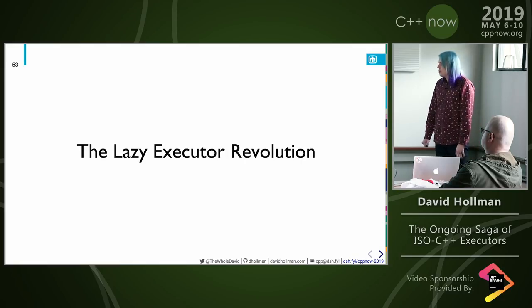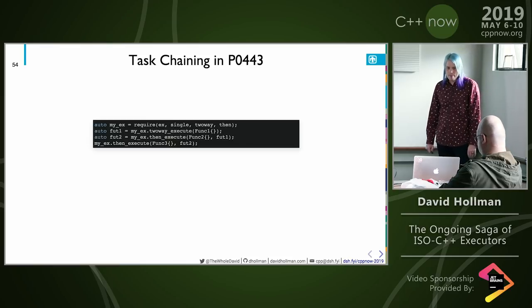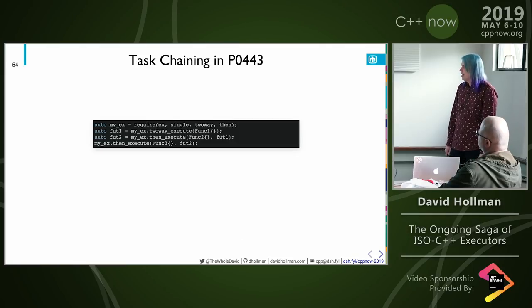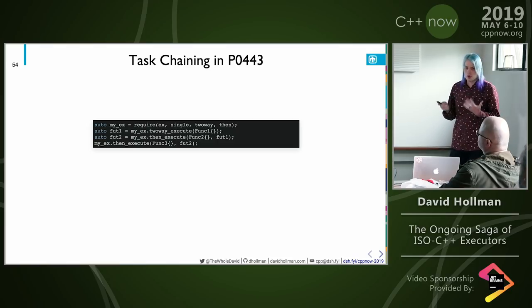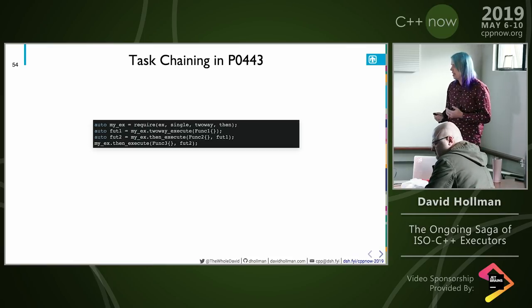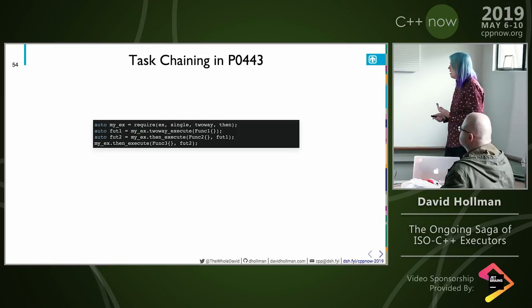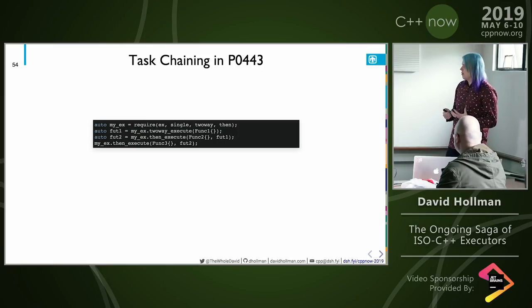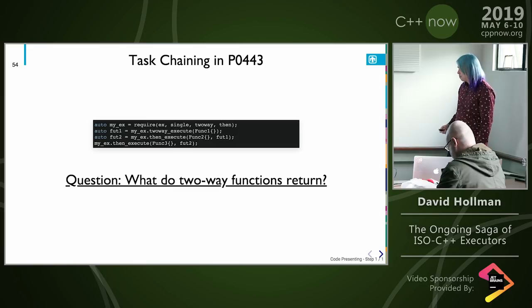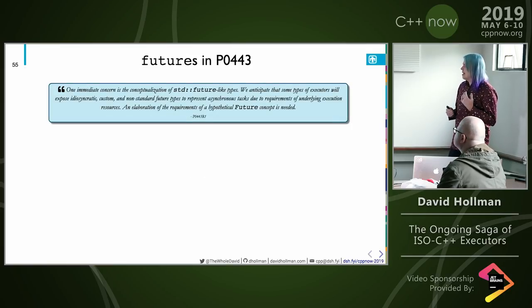That wasn't the end of the story. Let's talk about task chaining in P0443. We had a 'then execute' method and two-way execute methods that returned some sort of output channel — we were calling it a future as a placeholder, though we didn't want it to actually be std::future or std::experimental::future long-term. That was how you chained execution functions one after another in P0443. The question of what these two-way functions return was actually pretty ill-defined in P0443.